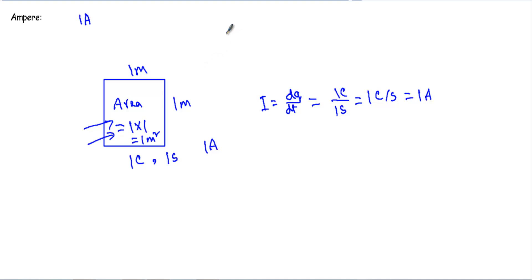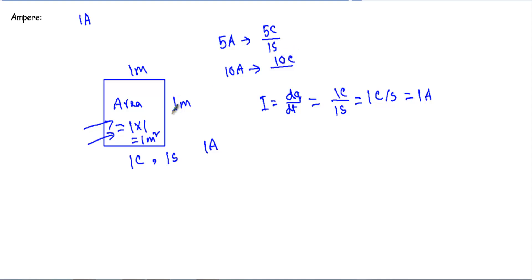If the current is 5 amperes, it means 5 Coulombs of charge move through one meter squared of area in one second. For 10 amperes, 10 Coulombs of charge pass through that area per second. As the movement of electrons increases, we get a higher amount of current through that area.